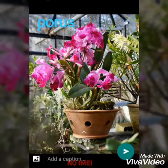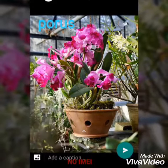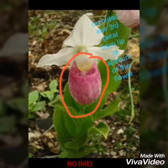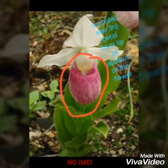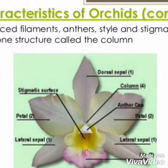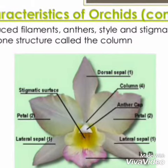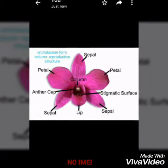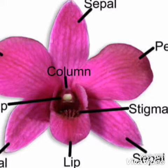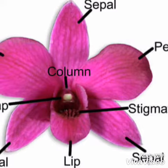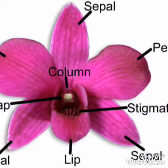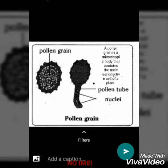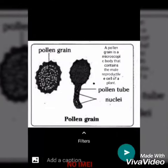Identifying characteristics of family Orchidaceae. The orchid's third petal forms the lip, or labellum, of the flower. Orchidaceae form a column, which is a reproductive structure. It has three parts: the anther, stigma, and ovary.